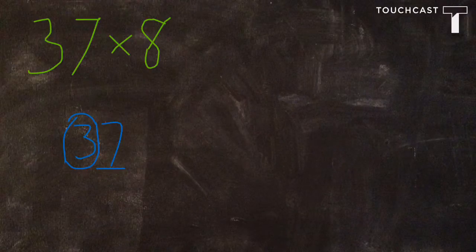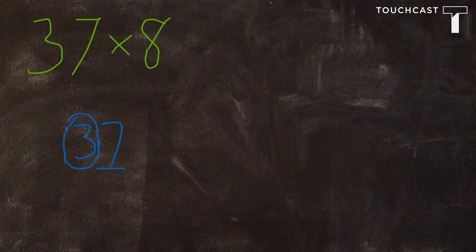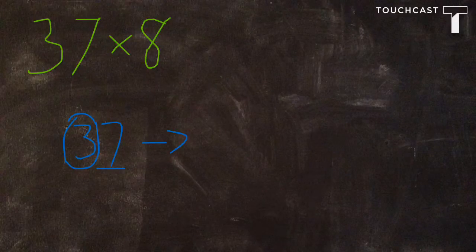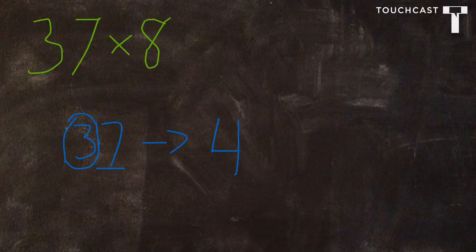So remember, 5 or more, let it soar. 4 or less, let it rest. So 37 is going to round to 40.